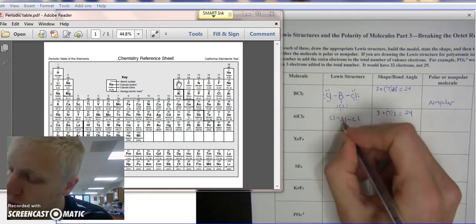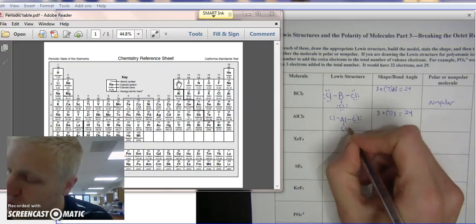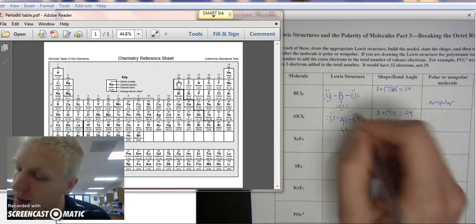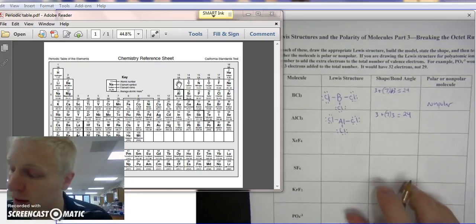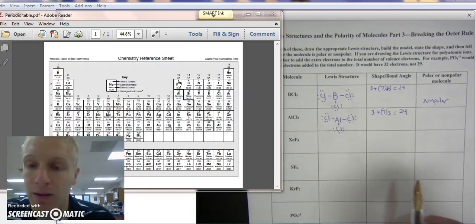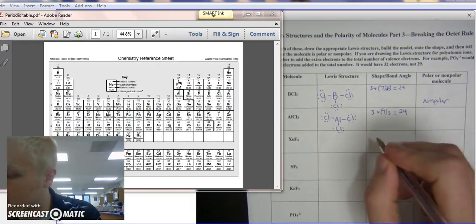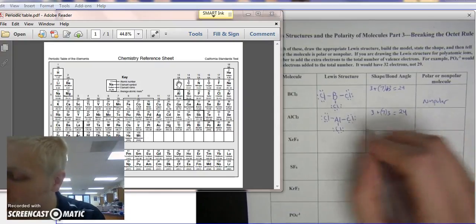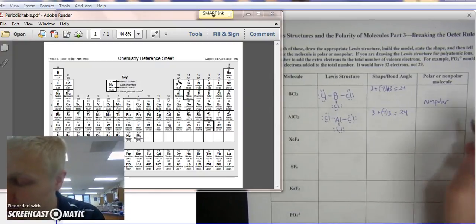Chlorine, chlorine, chlorine. [counting from 2 to 24]. You've used up all 24 electrons. That's alright. Aluminum just has 2, 4, 6 electrons. So this is trigonal planar. Therefore, it is symmetrical. And, therefore, nonpolar.